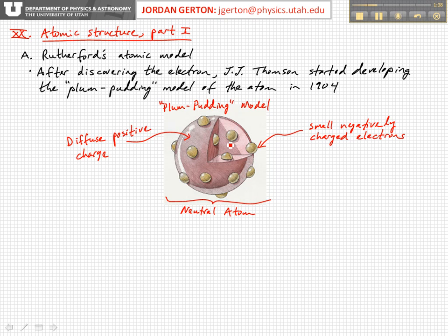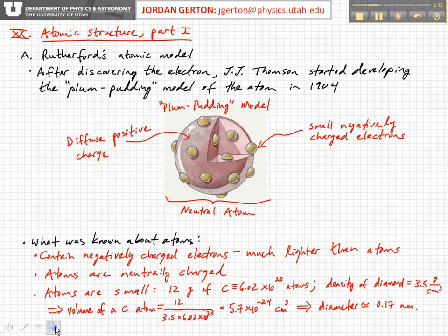This model was based on what was known about atoms at the time — namely that they contain negatively charged electrons, and that those electrons are in fact much, much lighter than the atoms. Also that atoms are neutrally charged; you could test that by using an electric field and showing that you don't get a net force on an atom. And also that atoms are very, very small.